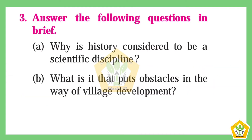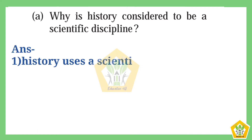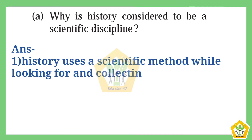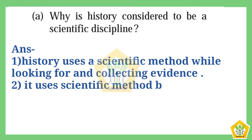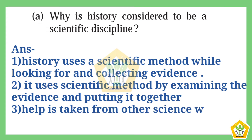Question number three: Answer the following questions briefly. (a) Why is history considered to be a scientific discipline? The answer is: First, history uses a scientific method while looking for and collecting evidence. Second, it uses the scientific method by examining the evidence and putting it together. Third, help is taken from other sciences when required.